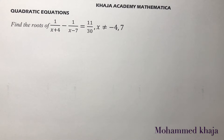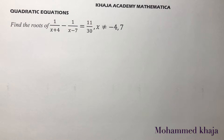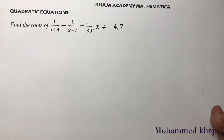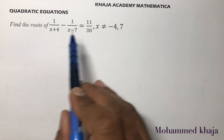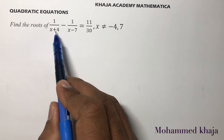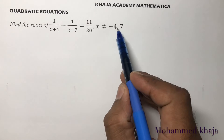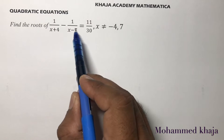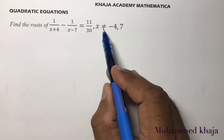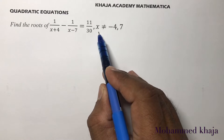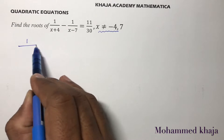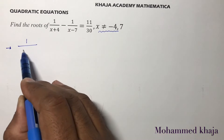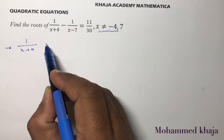Find the roots of 1/(x+4) minus 1/(x-7) equals 11/30, where x is not equal to minus 4 and 7. Because if x equals minus 4, the denominator becomes 0 — 1 by 0 is not defined. Similarly if x is 7, then x minus 7 equals 0, again 1 by 0 is not defined. That's why these values are mentioned as restrictions.